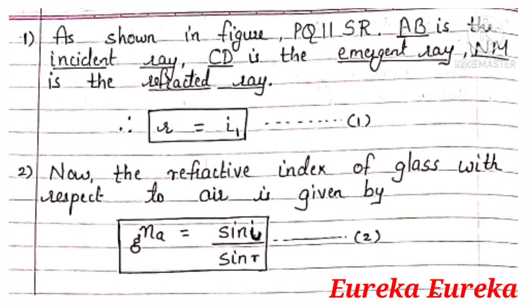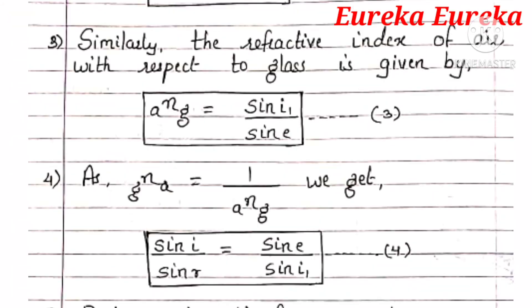Therefore R is equal to I₁. This is equation number 1. The refractive index of glass with respect to air is given by sin(I₁) upon sin(R) — equation 2. The refractive index of air with respect to glass is given by sin(I₁) upon sin(E) — equation 3. As the refractive index of glass with respect to air and the refractive index of air with respect to glass are reciprocals of each other, we get sin(I) upon sin(R) is equal to sin(E) upon sin(I₁), by reciprocating equation number 3.